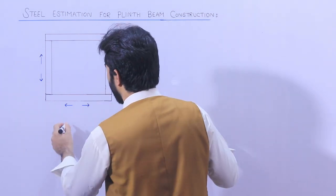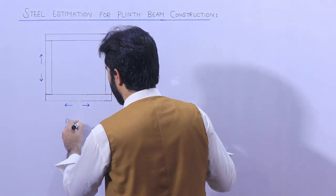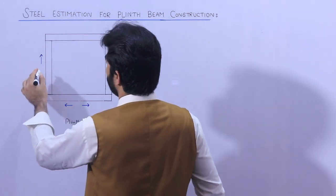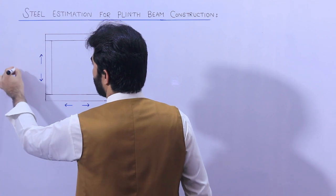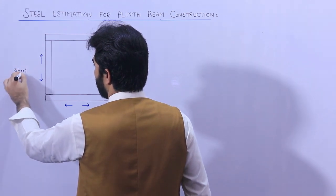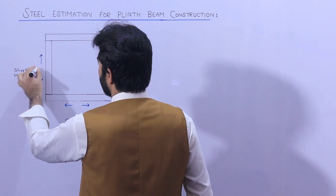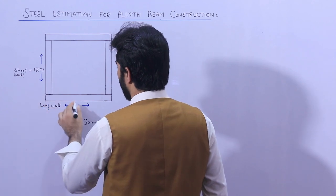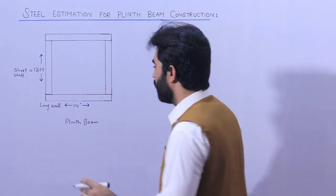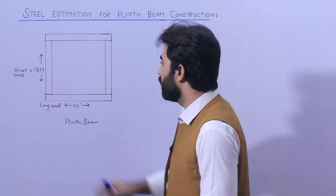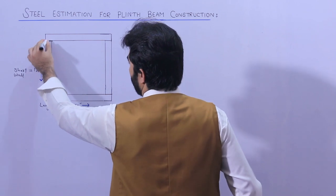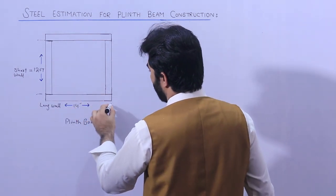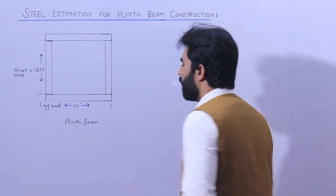This is the plinth beam. I am finding the steel calculation. The size of this plinth beam — you can see this is the short wall, which is 12 feet, and this one is the long wall, which is 14 feet. So the size is 14 feet by 12 feet. You can see this is the short wall and this one is the long wall.